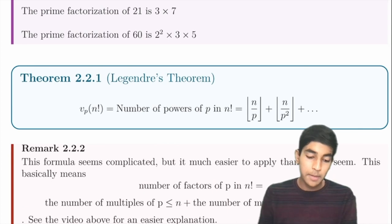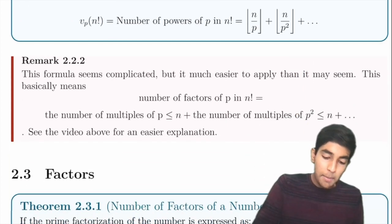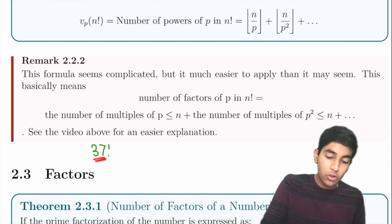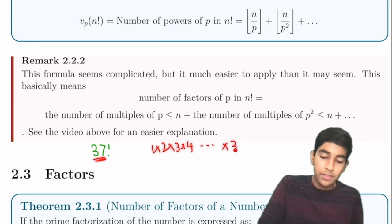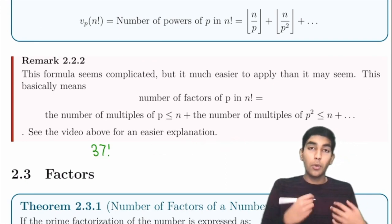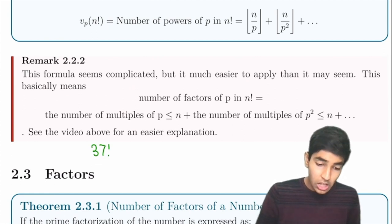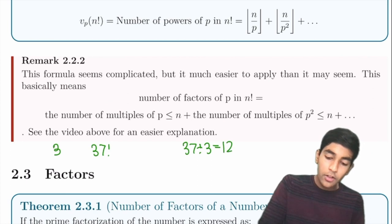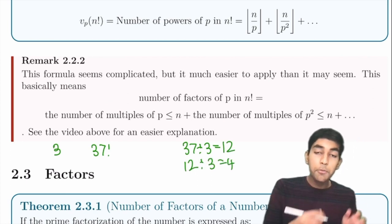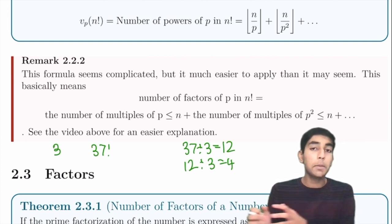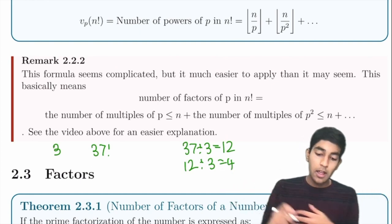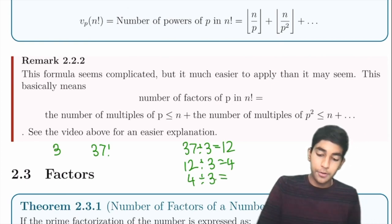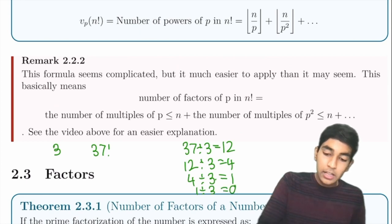Legendre's theorem: to find the number of times a prime p divides n!, repeatedly divide n by p (discarding decimals) and sum the results. For example, to find the number of factors of 3 in 37!: 37 ÷ 3 = 12, 12 ÷ 3 = 4, 4 ÷ 3 = 1, 1 ÷ 3 = 0. Sum: 12 + 4 + 1 = 17.